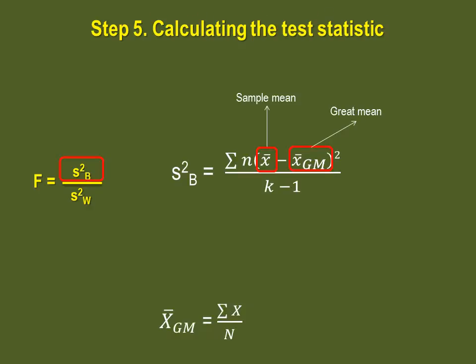A little parenthesis on how to calculate the grand mean. If you have all of the values, add them up and divide the result by the number of values you have. If you only have the sample means, you can add those up and then divide the result by the number of samples.